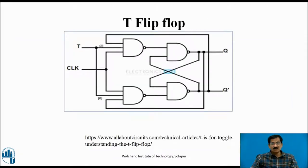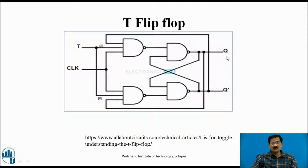The T flip-flop is obtained by shorting the two inputs J and K together. It is basically a JK flip-flop where J and K are shorted, giving only one single input T. The truth table has either 0 or 1. In the T flip-flop, if input T equals 0, output remains 0. If T equals 1, it creates a race-around condition and the output will be toggled.